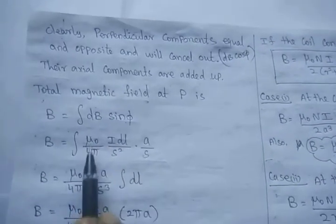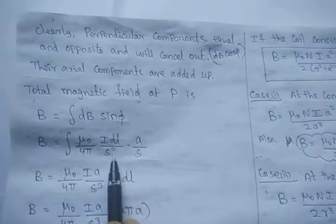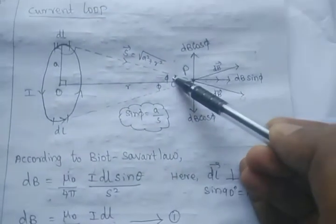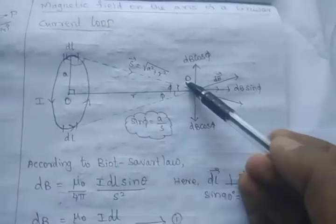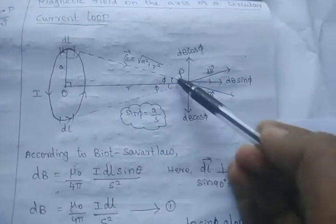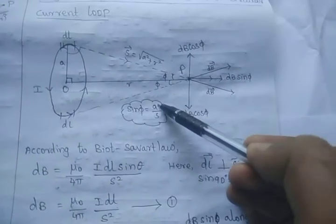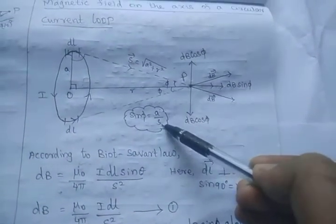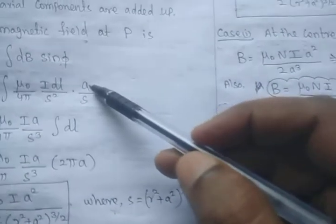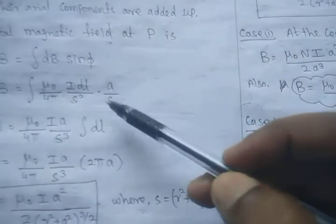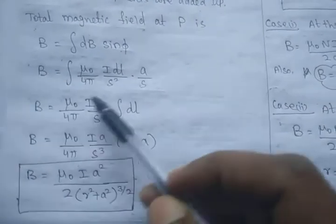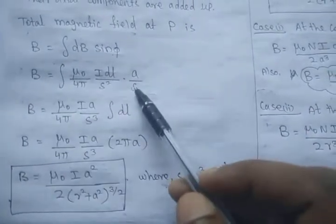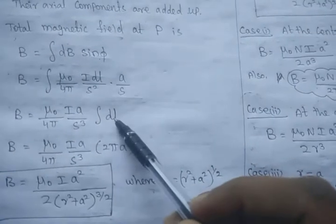So dB = (μ₀/4π) × I dl / S². Now substituting the sinθ value: from the right triangle, sinθ = A/S (opposite side over hypotenuse). So we substitute sinθ = A/S. Then B = (μ₀/4π) × (IA/S³) × ∫dl. Here IA and S³ are taken outside the integral.